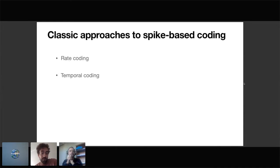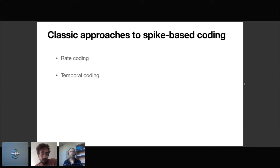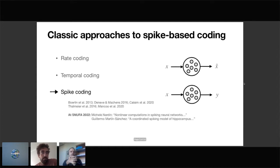We've already seen a bunch of approaches towards spike-based computation in this conference, and generally they fall into one of two categories. First, rate coding, where we use the average number of spikes a spiking neuron fires in a given time as an input-output function — useful for things like converting a deep net to a spiking net. Then we have temporal coding, an umbrella term covering time-varying spike patterns, spike latency, and precise spike timing.